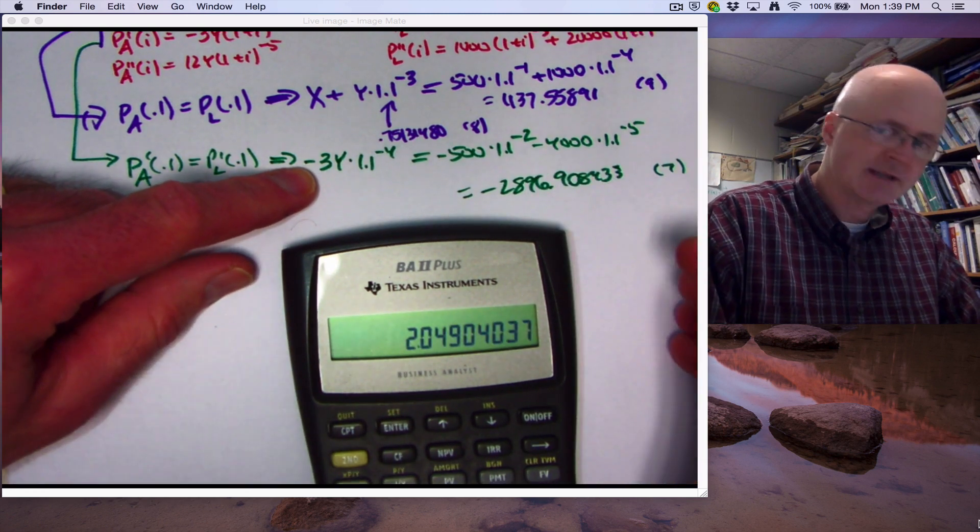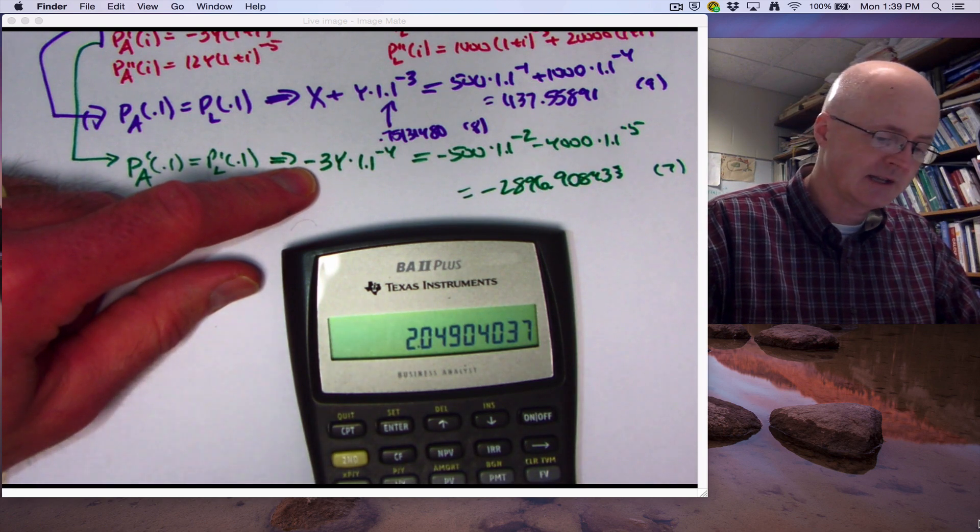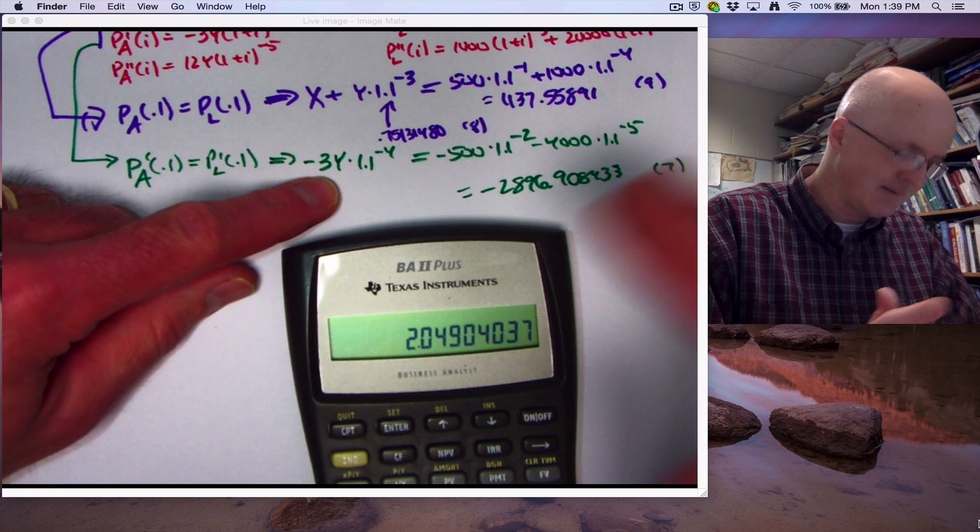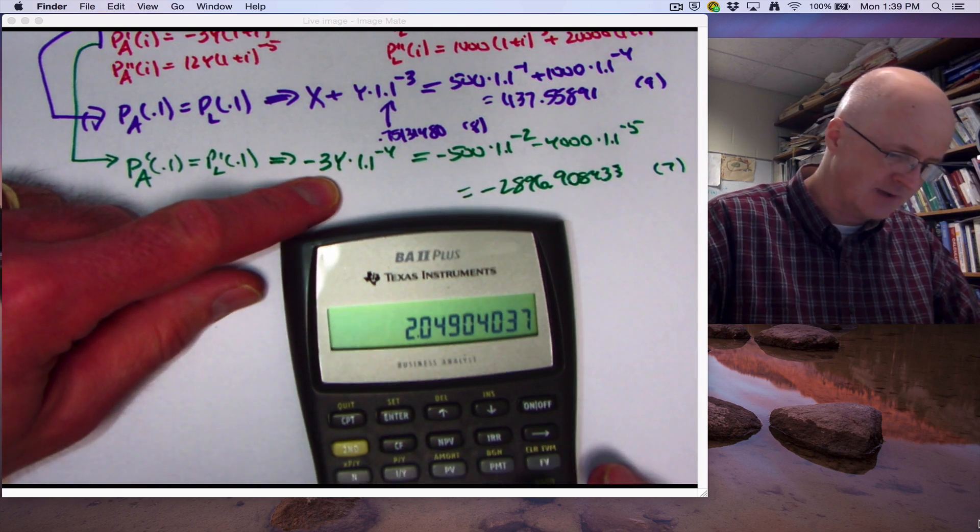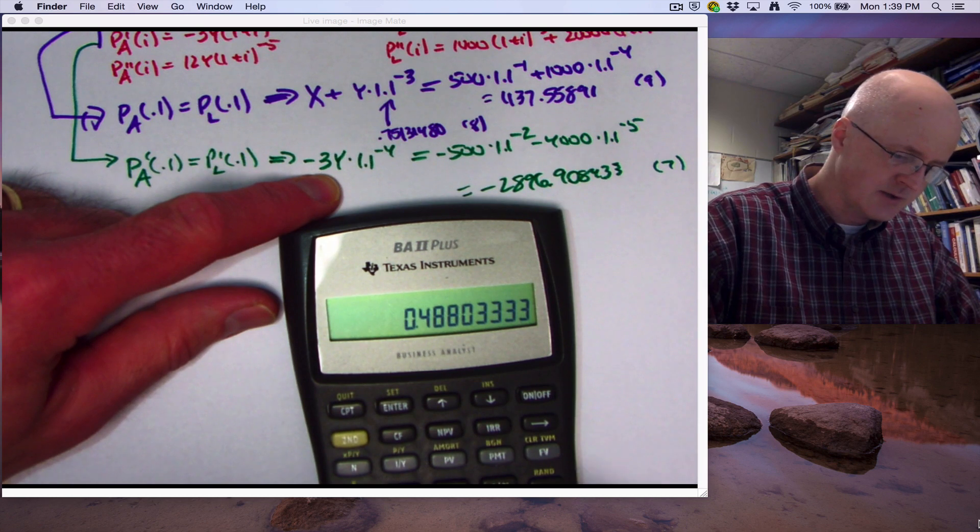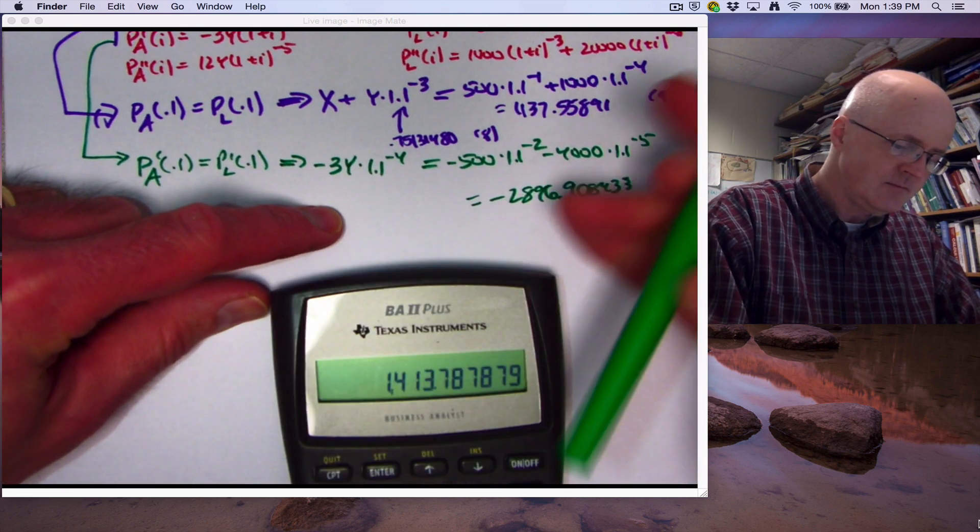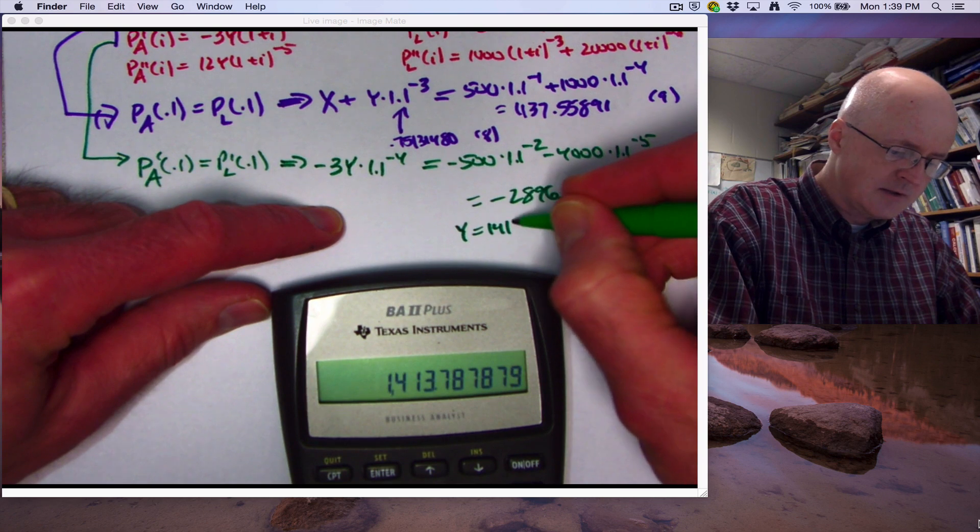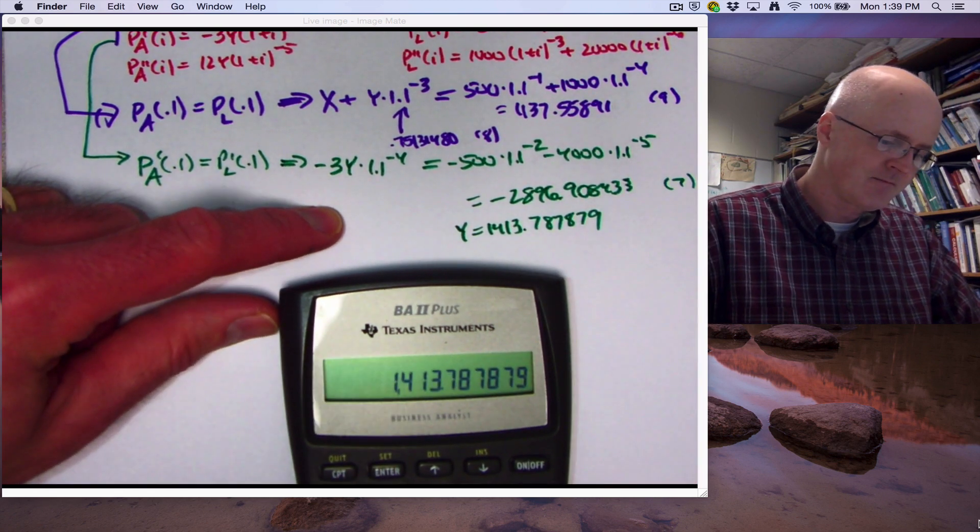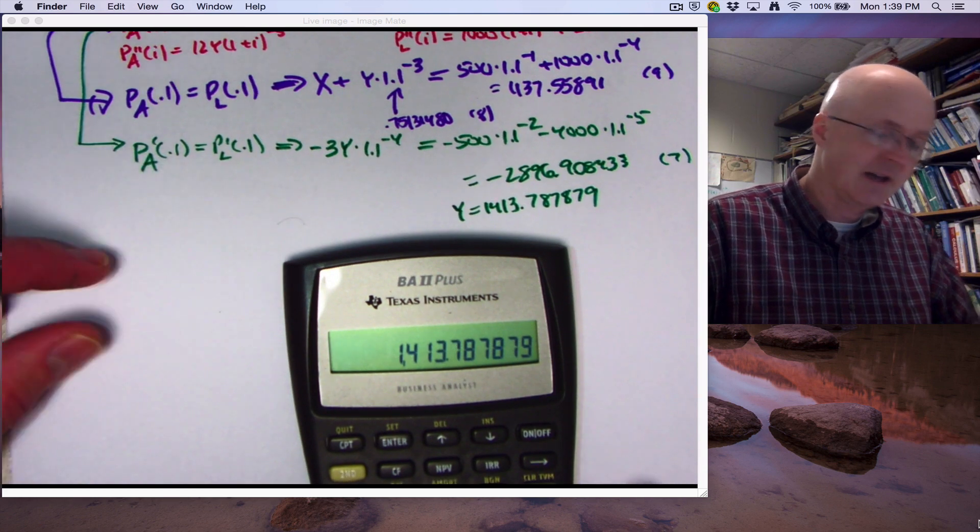Let's find v to the fourth power times 3. Okay, again, the minus signs will cancel here. This is what I'm going to have to divide both sides by to get what y is. And again, the minus signs are already canceled, including where I stored it. So I'm just going to take the reciprocal of this and multiply it by what's in register 7. And I get the value of y, 1413.787879. That is the value of y.